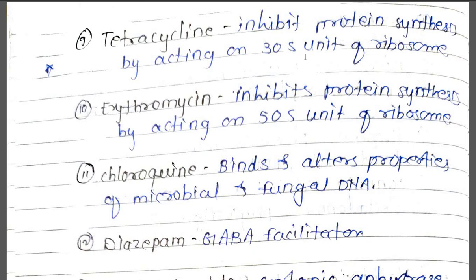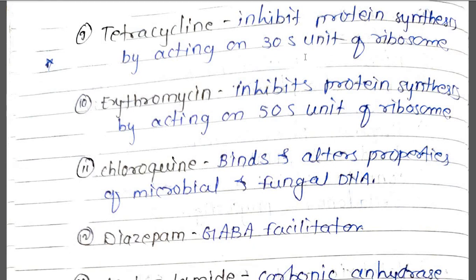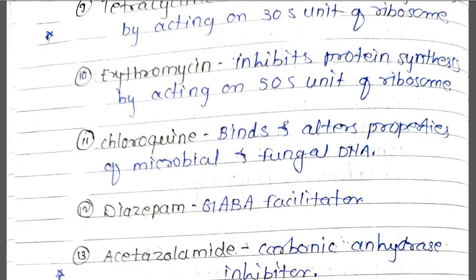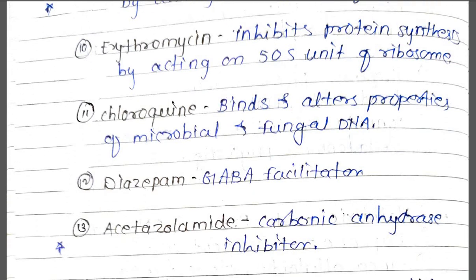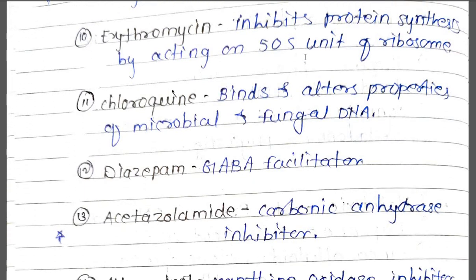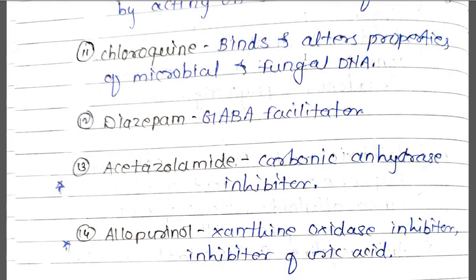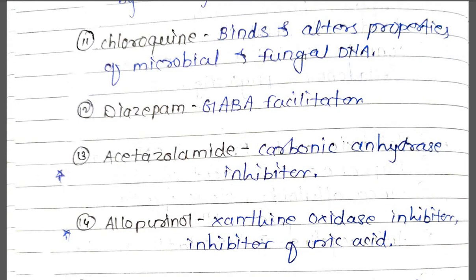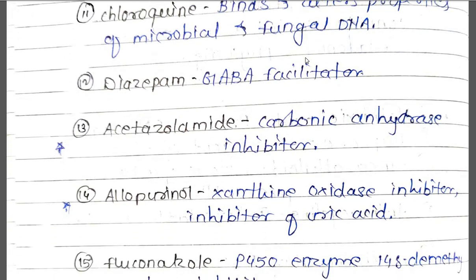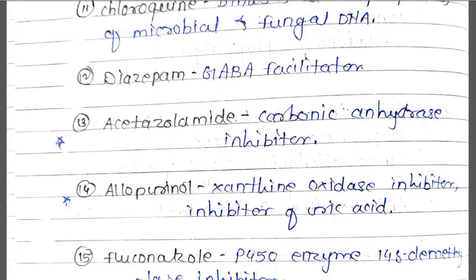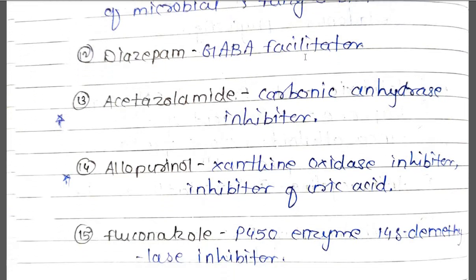Diazepam is a GABA facilitator. Acetazolamide is a carbonic anhydrase inhibitor. Allopurinol is a xanthine oxidase inhibitor and also inhibits uric acid synthesis.